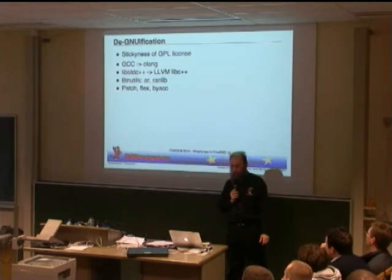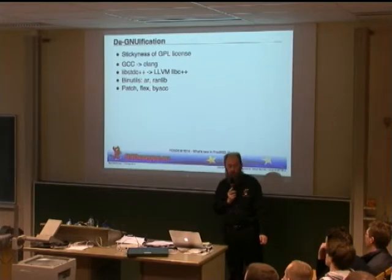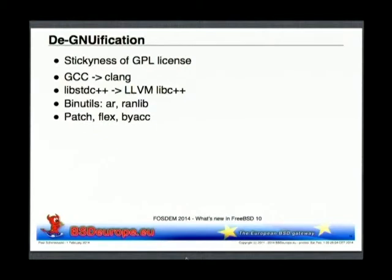Also, the libraries — most notably the libstdc++ library — was released under the GNU license. A lot of work has gone into replacing that with the libc++ from the LLVM project, the same project that created Clang. In FreeBSD 10, AR, the archive manager, ranlib, and some other tools have been replaced by tools that are BSD licensed or at least have a more relaxed license.